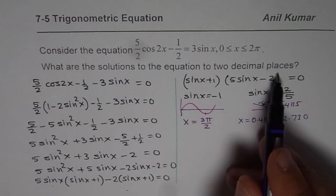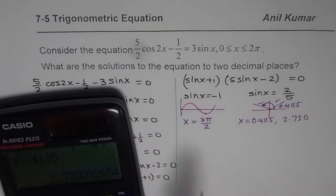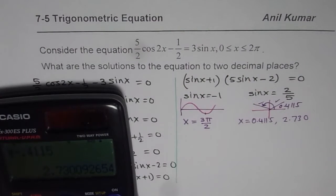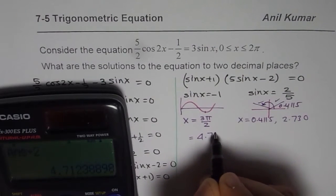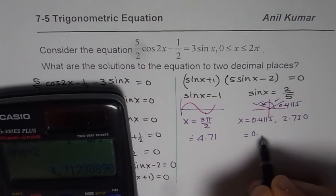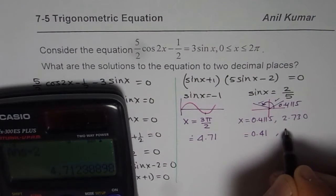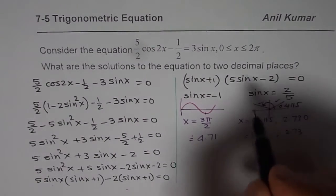Now we have to round them to two decimal places. That means we will even round 3π/2. We do not want exact values. So we will do 3 times shift π divided by 2 equals to convert to decimals. We can write this as 4.71 approximately to two decimal places. Here we can round this to 0.41 and this can be rounded to 2.73. These are the three answers rounded to two decimal places.